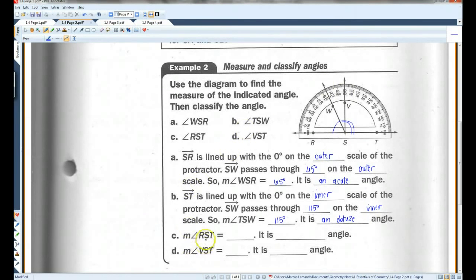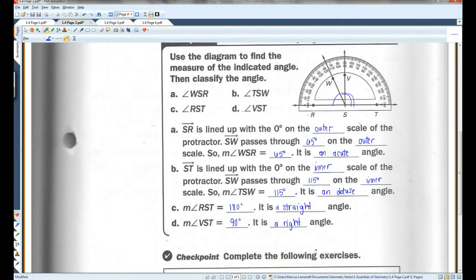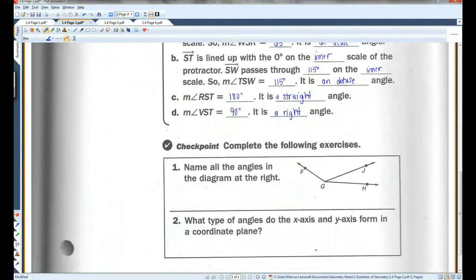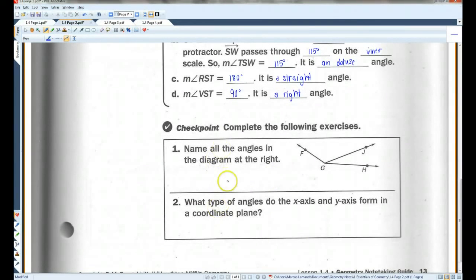The measure of angle RST. RST is a straight line, so it's 180 degrees. It is a straight angle. Angle VST is clearly a right angle. It's 90 degrees exactly. For this checkpoint, I think you guys can do these on your own. Go ahead and pause the video here if you like. Let's go on to page three.